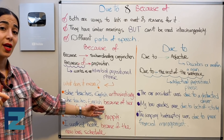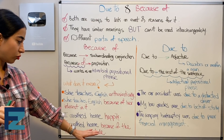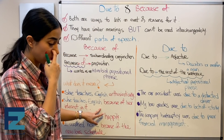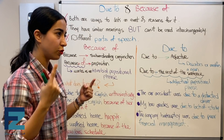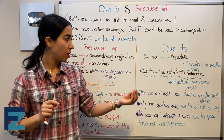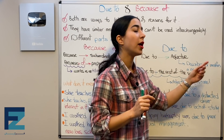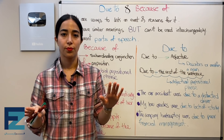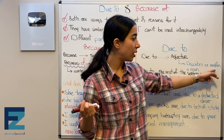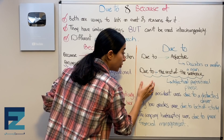So the key point: 'because of' plus everything that follows it is modifying the verb in the sentence. Now let's look at 'due to.' Due to is an adjective. What does an adjective do? An adjective describes or modifies a noun. So 'due to' functions as an adjective.